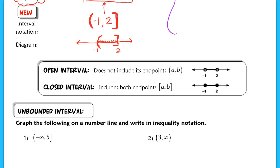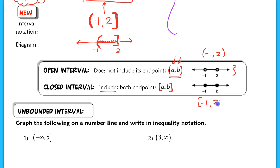A couple more vocabulary terms: an open interval is an interval that does not include its endpoints. As you can see, we have two parentheses — one on A and one on B — meaning both endpoints are not included. A closed interval includes both its endpoints, so we have closed brackets on both sides. We would rewrite that in interval notation as the closed interval, negative 1 to 2.